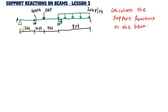Pin supports don't allow movement in the x and y direction, while roller supports don't allow movement in the y direction. At the pin support we are going to have two unknown forces, while at the roller support we are going to have one unknown force.